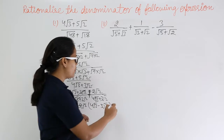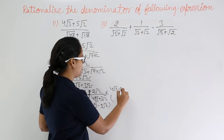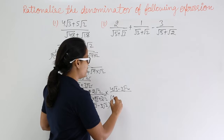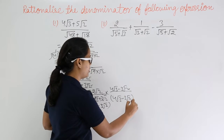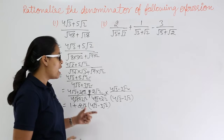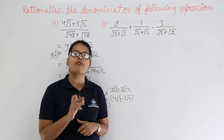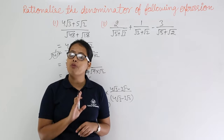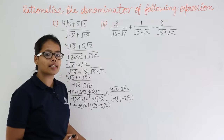And you know that when you are rationalizing it, you will be getting the same thing in the denominator as well. This is the (a + b)(a − b) form. After rationalization, keep in mind you will always get the form a² − b². I won't be writing this again and again; I will directly write this step.